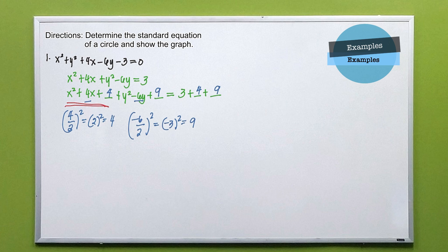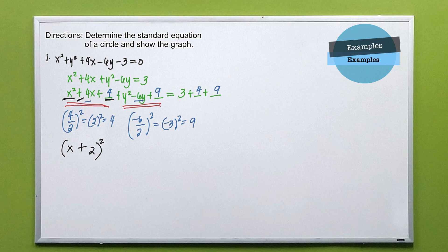We call this the perfect square trinomial. To shorten it, we write it in factored form. Take the square root of the first term — we have x — and the square root of the constant term, which is 2. The operation used is addition, so we write (x plus 2) squared. Similarly for y: the square root of y squared is y, and the square root of 9 is 3. The operation used is minus, so we write (y minus 3) squared. Then add all the constants on the right side: 3 plus 4 plus 9 equals 16.